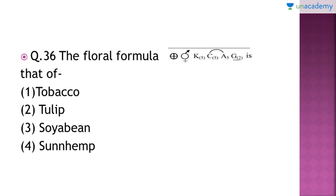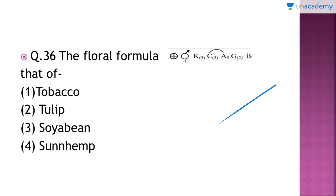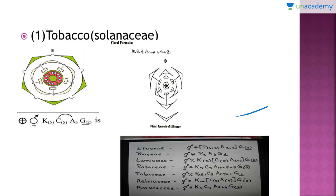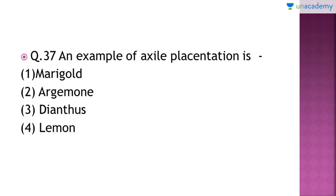Question number 36: the floral formula given here is that of which of the following plants? This question is from a very important portion of NCERT. The right answer is option number one, that is tobacco. The floral formula given is of the family Solanaceae, and since tobacco belongs to family Solanaceae, the formula is of tobacco. Here you can see the floral diagram of the family Solanaceae and the floral formula. The three families given in NCERT — Solanaceae, Fabaceae, and Liliaceae — are very important, but you can learn other floral formulas too.